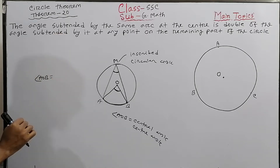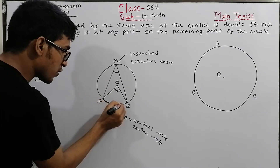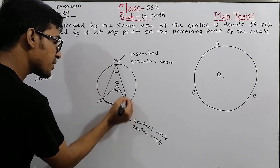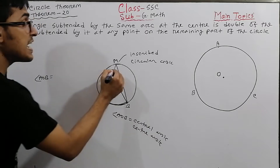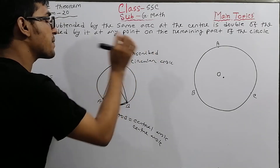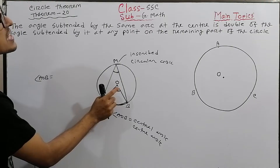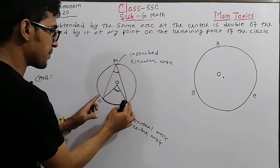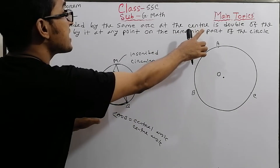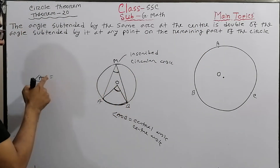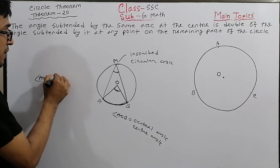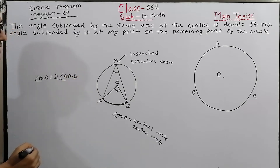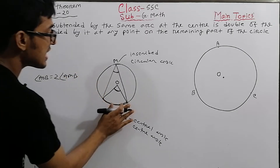So the key statement is: the inscribed angle BSC is in its current position. The angle subtended at the center is double the inscribed angle. That means the central angle BOC is double the inscribed angle BSC — this is what we need to prove.